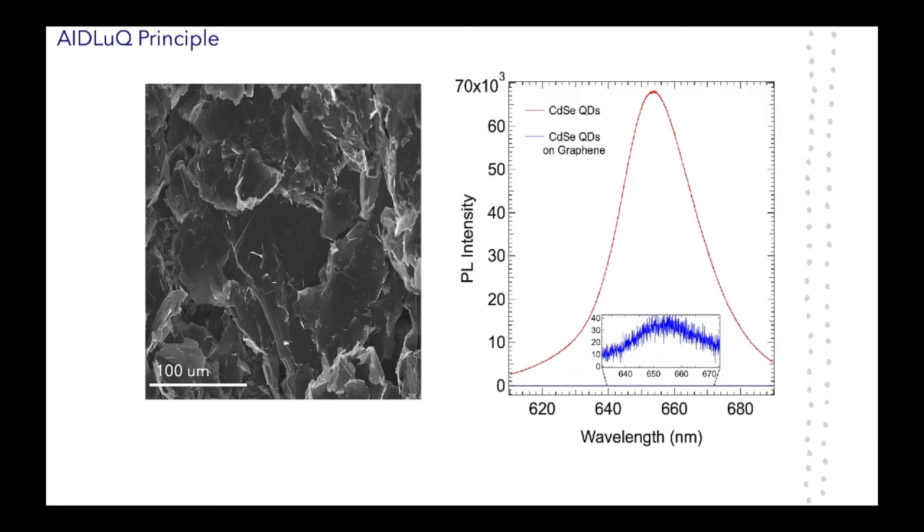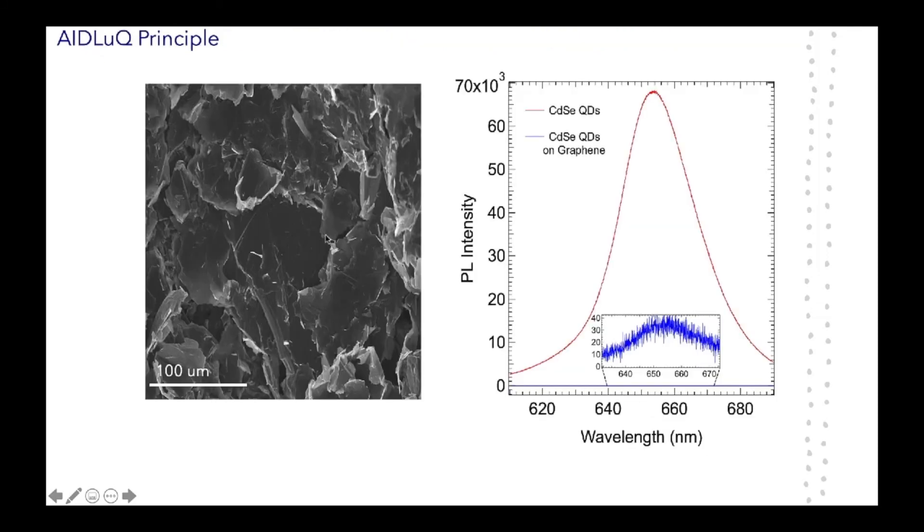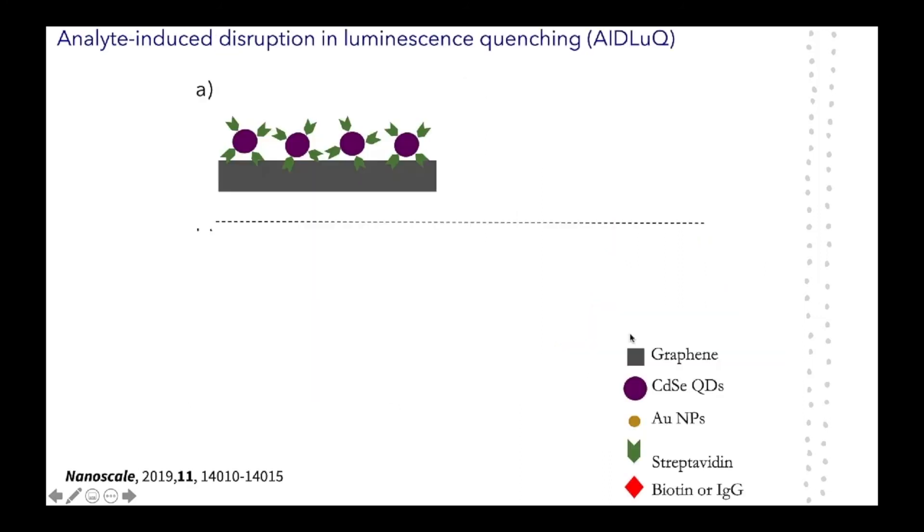Here, the special thing is that cadmium selenide quantum dots fluoresce when they are on normal paper, as you can see in the red curve. But when they are on graphene, their fluorescence is inhibited or quenched because graphene pi orbitals reduce the fluorescence of cadmium selenide. We use that to our advantage to perform the AIDLUCK assay. So, here we have one centimeter square coupon with cadmium selenide quantum dots coated with anti-IgG antibodies.